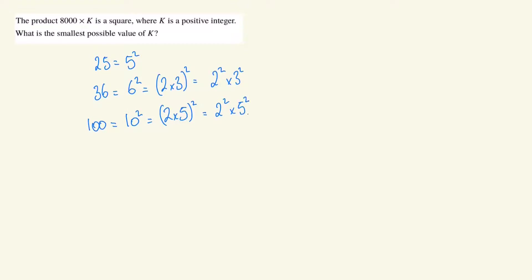What do you notice about these three square numbers? Well, in each of them, a prime factor appears an even number of times. So in 25, the prime factor is 5, which appears twice. In 36, the prime factors are 2 and 3, which also appear twice. And the same with 100, the prime factors are 2 and 5, and they both appear twice.